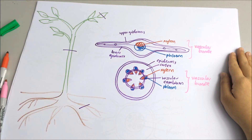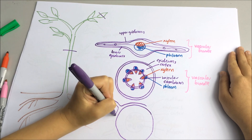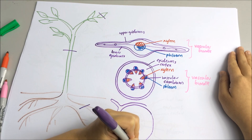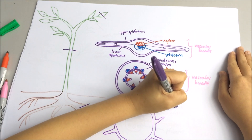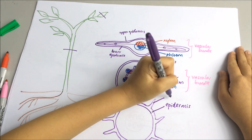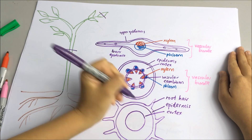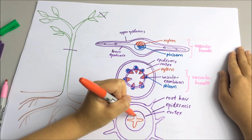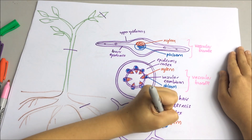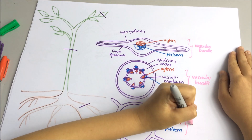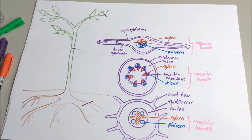There is also epidermis followed by cortex. If we take the cross-section and look at the root, this is the epidermis — they have very specialized cells known as root hair cells, followed by cortex. You will find that the xylem and phloem are arranged at the center of the root. This is to withstand the stretching forces and to prevent the plant from being pulled up from the ground.